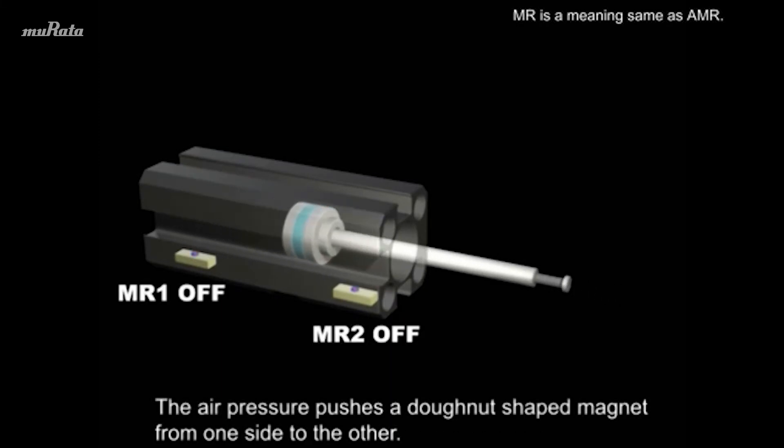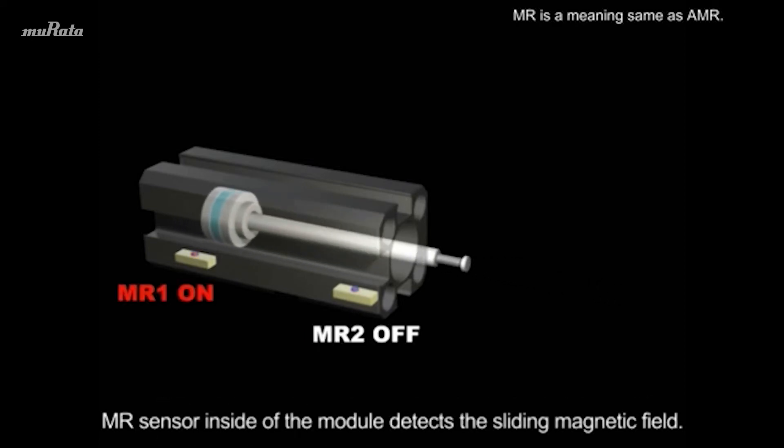The air pressure pushes a donut-shaped magnet from one side to the other. MR sensor inside of the module detects the sliding magnetic field.